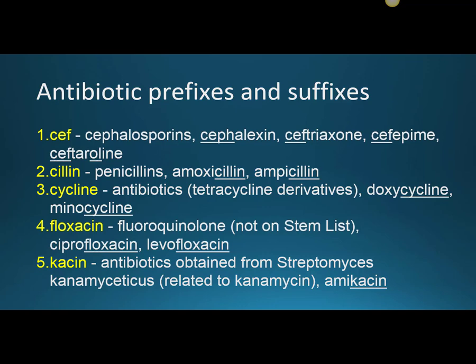KANAMYCIN — an antibiotic obtained from streptomyces kanamyceticus and related to kanamycin. We have to be careful here: the ACIN stem appears in amikacin. We can say it's an antibiotic, but we can't necessarily say it's a certain class. Amikacin just happens to be an aminoglycoside. So the CEPH for cephalosporin, CILLIN for penicillin, CYCLINE for tetracycline, and FLOXACIN for fluoroquinolone were reliable for identifying class — but the ACIN stem may not be.